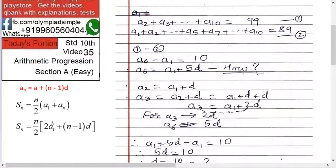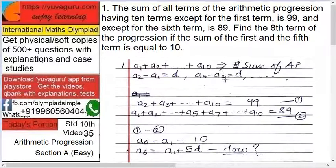Coming back to our problem, what is given? Condition number 1: a₂ plus a₃ plus a₄ up to a₁₀ equals 99. Then condition 2: a₁ plus a₂ plus a₃ up to a₅, then leave a₆, then a₇ plus a₈ plus a₉ plus a₁₀. This total is 89.